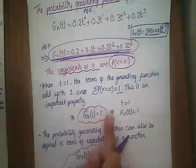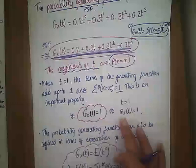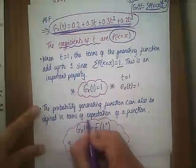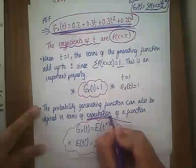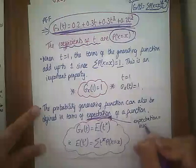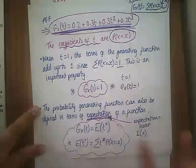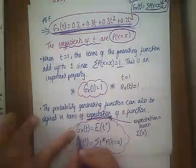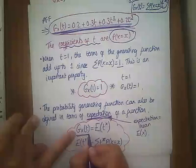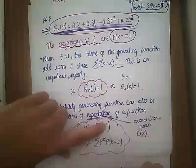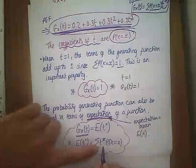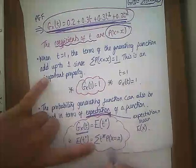We could also write our PGF in terms of the expectation. We've talked about expectations before — expectation could also be the mean, given by E(X). We can say the PGF G_X(t) is equivalent to the expectation of t to the power of X, E(t^X). That expression means exactly the same thing and gives us our mean value.